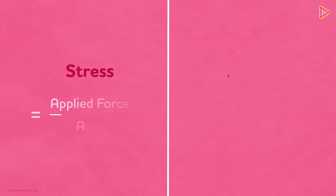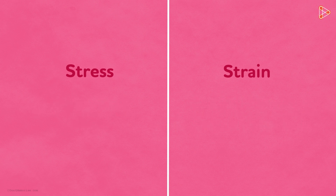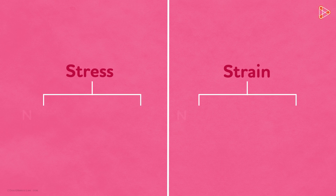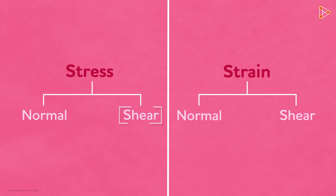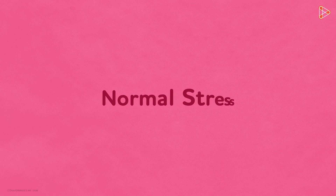In the last video, we saw what stress and strain meant. In this video, let's try understanding their types. Both stress and strain have two basic types: normal and shear. So there's normal stress and shear stress, and normal strain and shear strain. We'll be discussing the normal type in this video. Let's begin with normal stress.